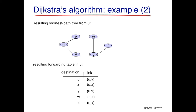This means that when U receives a packet destined for W, it will forward the packet to X, because it knows that is the direction in which to send the packet so that it reaches its final destination.